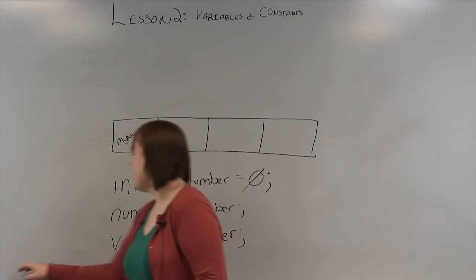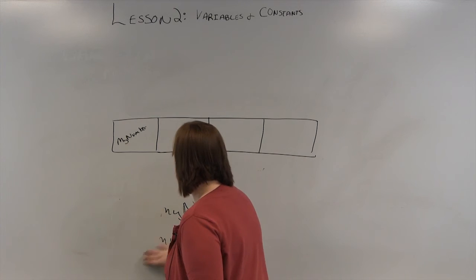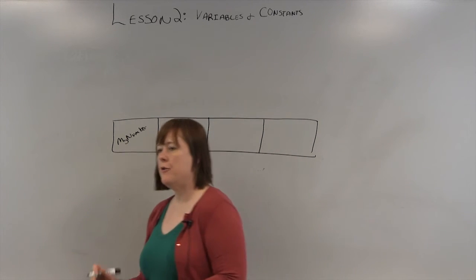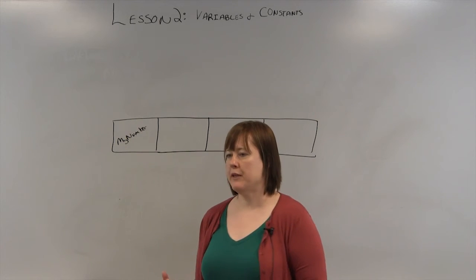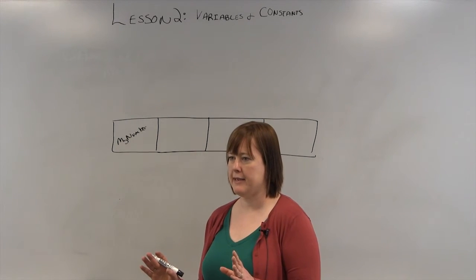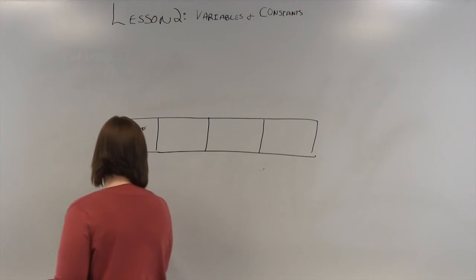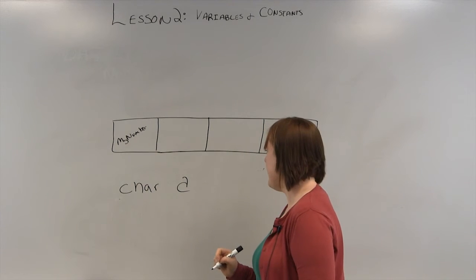The other type, common type of variable that you'll use frequently, is a string. Now, you can get, depending on the language that you're working with, you're frequently going to work with strings. But strings aren't what's considered to be a primitive data type. A primitive data type would be a character, like the letter A. That would be a character type.